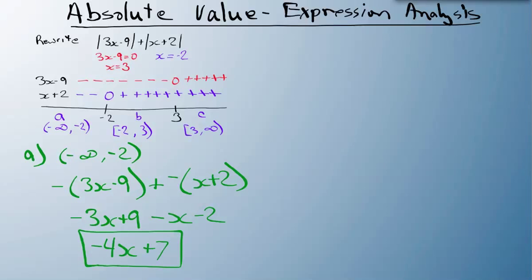For section B, from minus 2 to 3, 3x minus 9 is still negative, so I flip it. I have the plus from the original equation. But x plus 2 is positive, so I leave it as is.